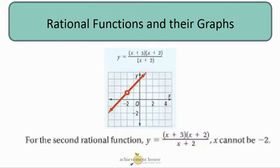Here's an example of a discontinuous graph. We see that there's a removable discontinuity at x equals negative 2, and therefore you see a hole at x equals negative 2. There's a hole in the graph.